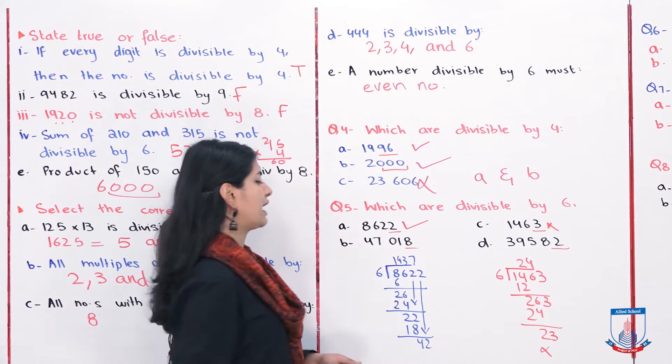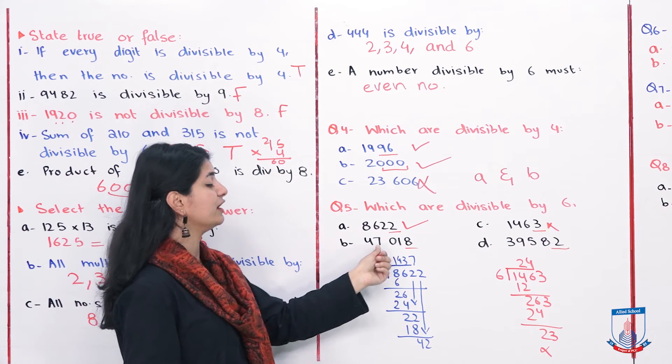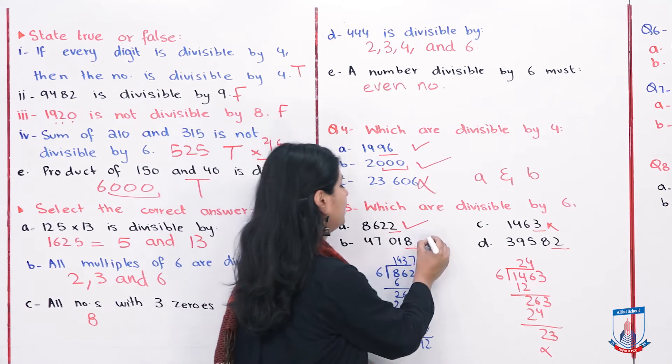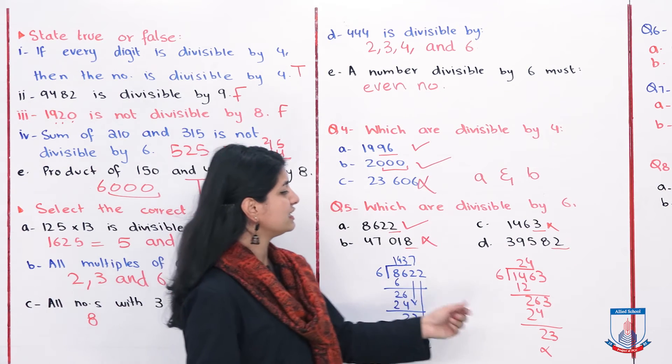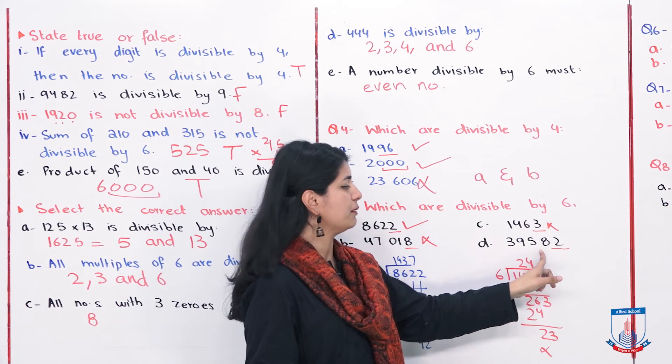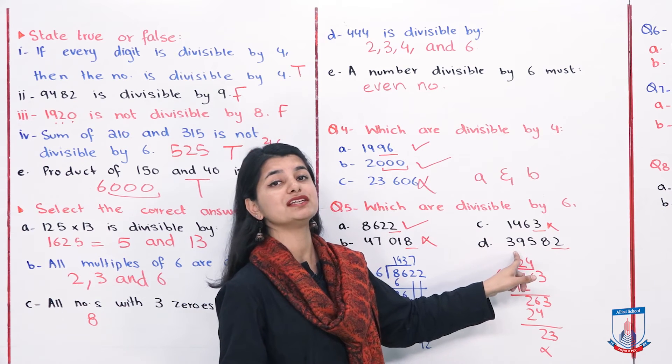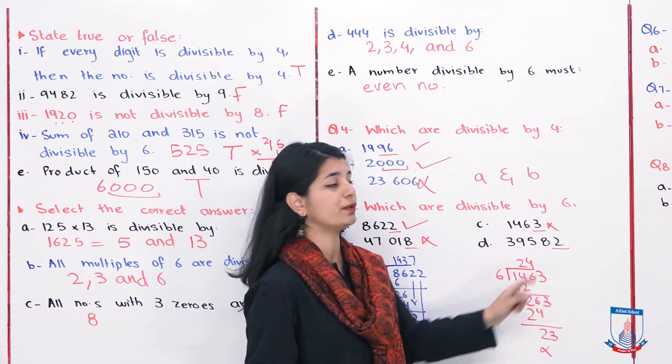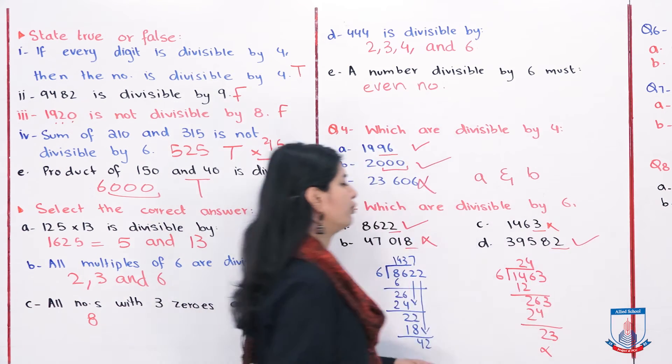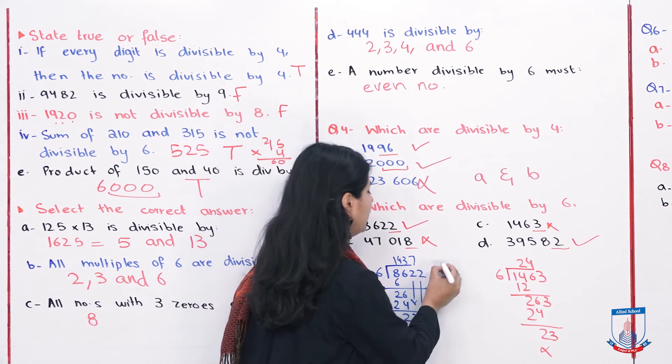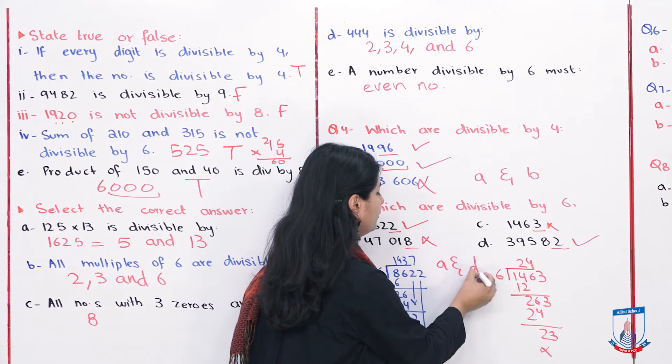Now check option B. Is it divisible by 3? 8+1 is 9, 9+4 is 13, 13+7 is 20. So this is not divisible. And lastly, 2+8 is 10, 10+5 is 15, 15+3 is 18, 18+9 is 27. So the correct option is A and D.